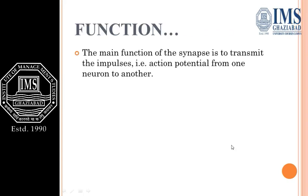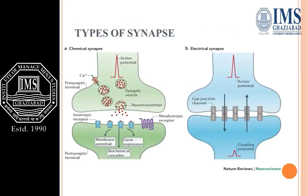The main function of the synapse is to transmit impulses or to generate action potential from one neuron to another. There are two types of synapses: one is the chemical synapse and the other is the electrical synapse.